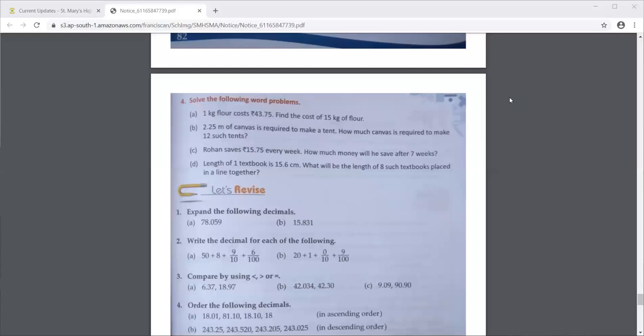Now regarding statements, what statement will you write for rupees 15.75? What is it? It is the amount Rohan saves every week. So rupees Rohan saves every week, if you want you can write rupees. If you don't know the word amount, you can also write that. And therefore the money he will save in 7 weeks, that will be your therefore statement.